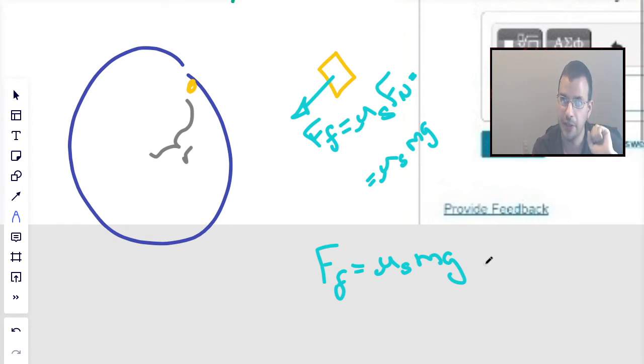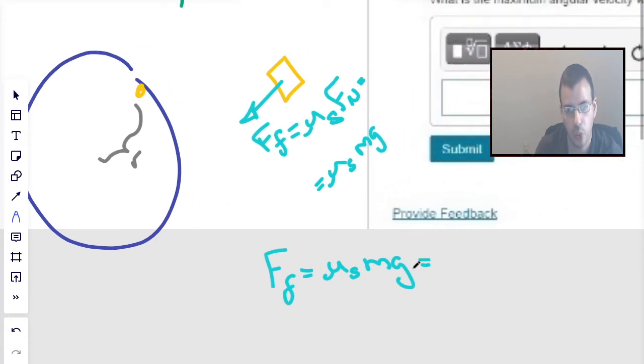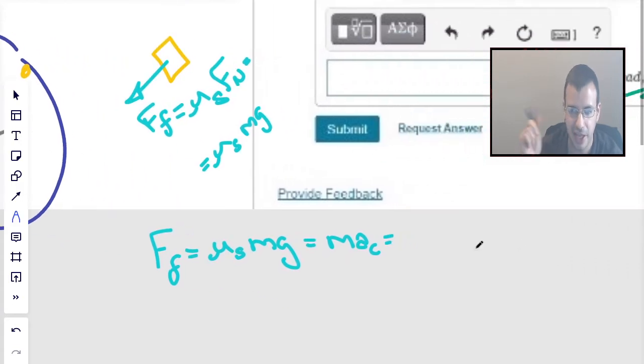It's the force of friction that's allowing the coin to not slide off the turntable with the spinning. So µ times mg equals mass times acceleration. I'll draw a little c there as a subscript, just as a reminder that that is centripetal acceleration.